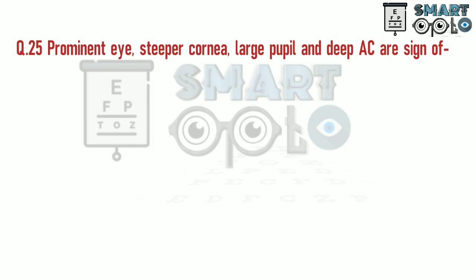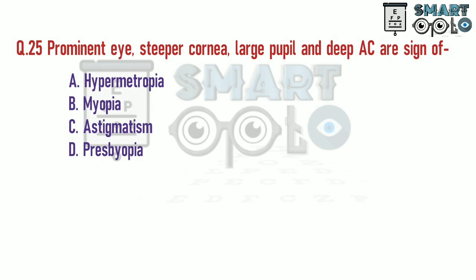Q25. Prominent eye, steeper cornea, large pupil, and deep anterior chamber are signs of: A. Hypermetropia. B. Myopia. C. Astigmatism. D. Depressed biopia.